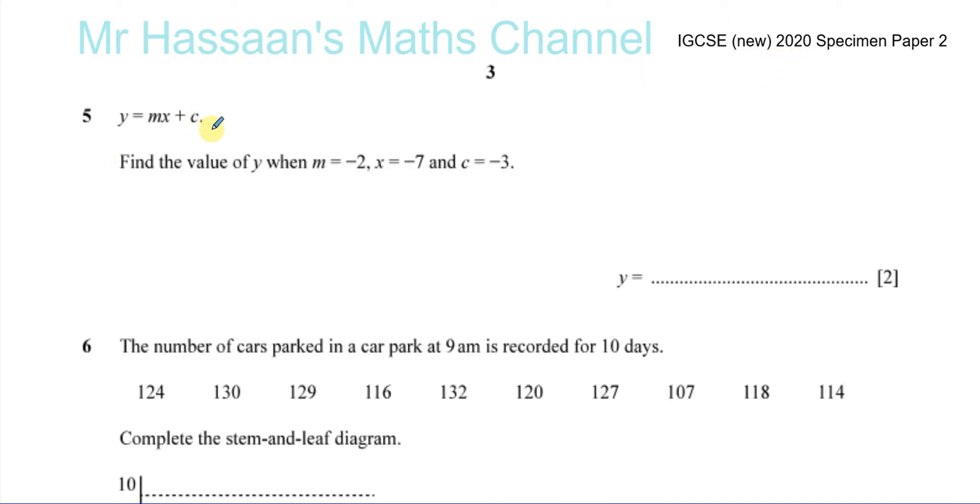It says y equals mx plus c. Find the value of y when m equals negative 2, x equals negative 7, and c equals negative 3. Now we have to substitute these values into the equation.